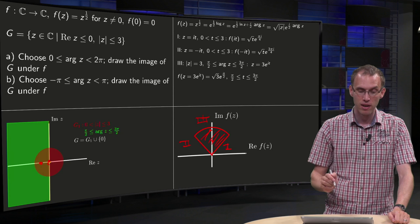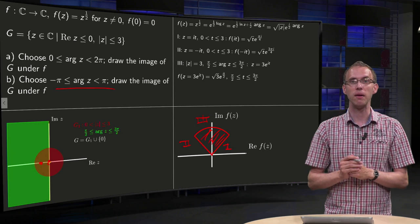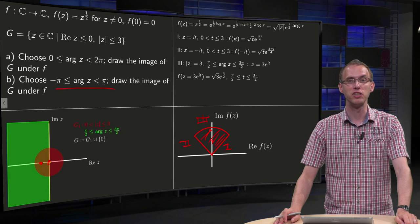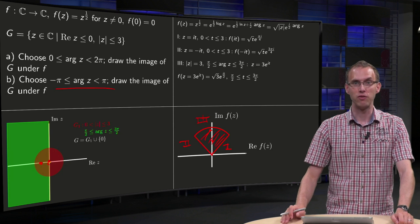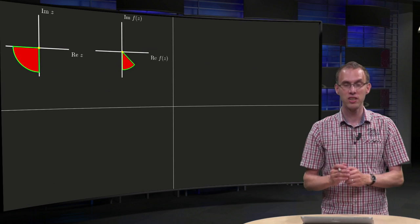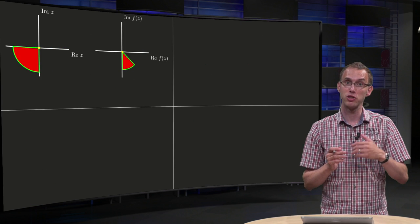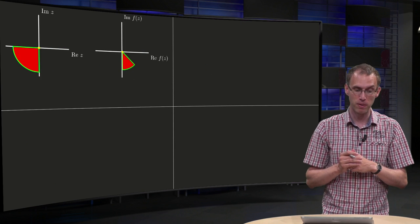Then question B looks completely the same. Will you get the same image region? Well, that would be silly of course, and that's not the case. Here you have to be really careful because your argument is between minus pi and pi.